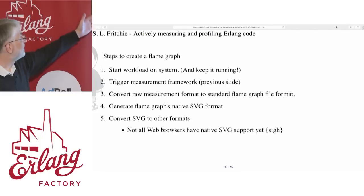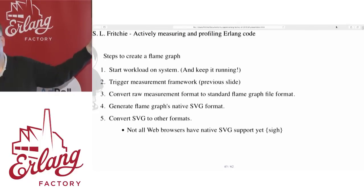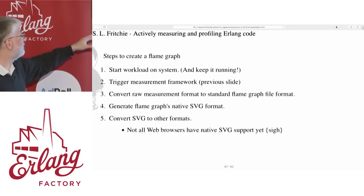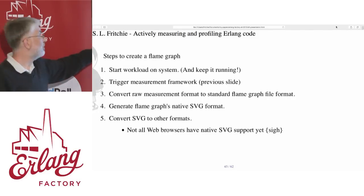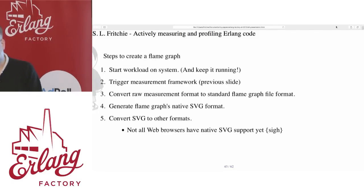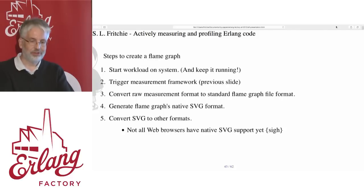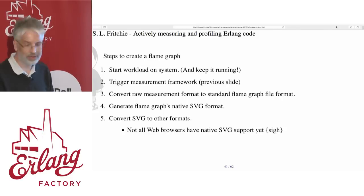To create the flame graph: start a workload on the system, keep it running for the duration of the measurement, use the measurement framework, then convert the raw measurements to the standard flame graph input file format, generate an SVG image, and if you need to convert that to another graph format you can do so.